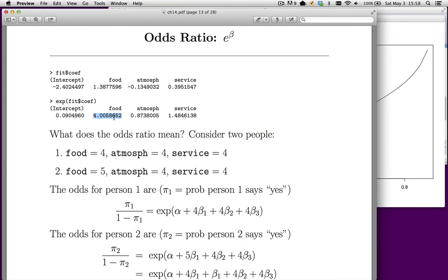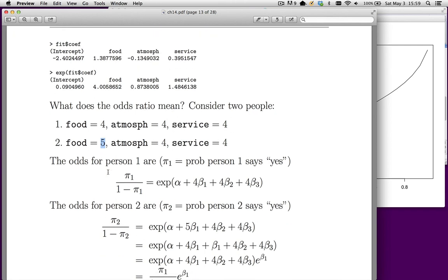What does this mean? The odds ratios describe the multiplicative effect on the odds—not on the log odds, but on the odds. Consider two people. Person one has scores of four for each coefficient: X₁ (food) = 4, X₂ (atmosphere) = 4, X₃ (service) = 4. Person two is identical except food = 5. The odds for person one are e^(α + 4β₁ + 4β₂ + 4β₃).